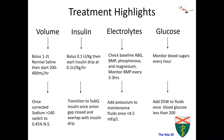Regular insulin is used in the treatment of DKA, as its IV formulation is rapid-acting and can easily be titrated. A bolus of around 0.1 units per kilogram of regular insulin should be given, followed by starting an insulin drip at 0.1 units per kilogram per hour. It is important to remember that in DKA, the insulin drip must be frequently adjusted based on the trend of the patient's blood sugars.